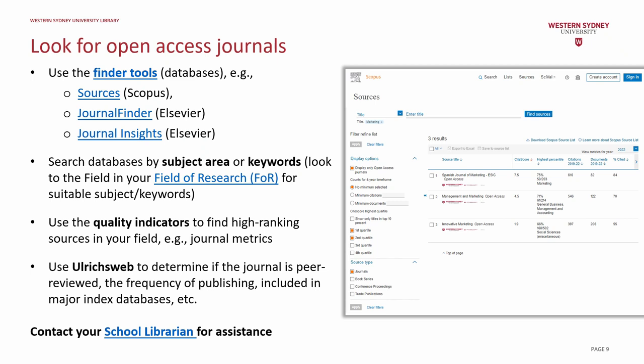Later, you can use Ulrichsweb, a database listed in the A to Z database list on the library website, to check if a journal has been peer reviewed, to determine its frequency of publishing, and to confirm which major databases it is indexed and discoverable in, such as Scopus, Web of Science, Directory of Open Access Journals, or PubMed. You should do other quality checks to find a suitable journal, and this is where your school librarian can assist.